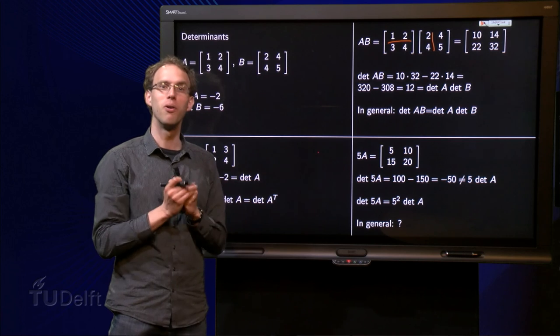And this one holds in general. We will see why after we see what row operations do with determinants, so that will come later. But here we see already an example happening. So, what would be the general rule? This is for a 2 by 2 matrix, what would be the general rule for an n by n matrix? Well, try to guess it, and post your guess below on the forum.